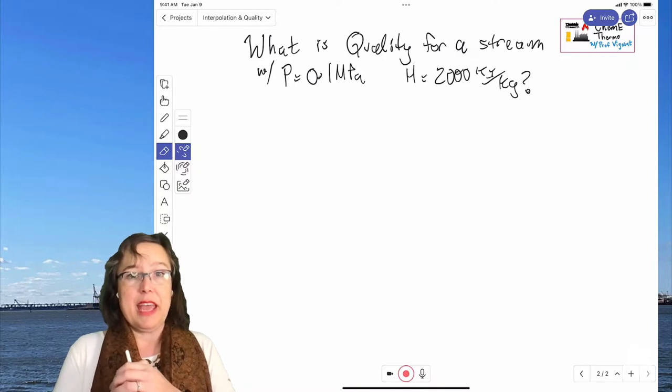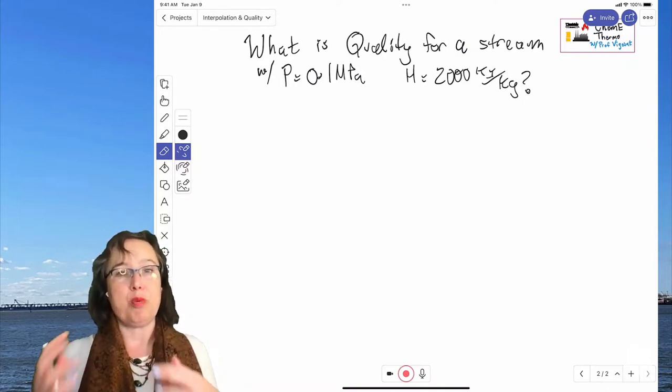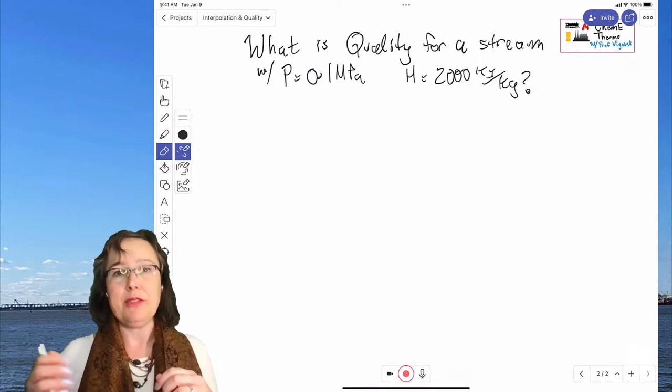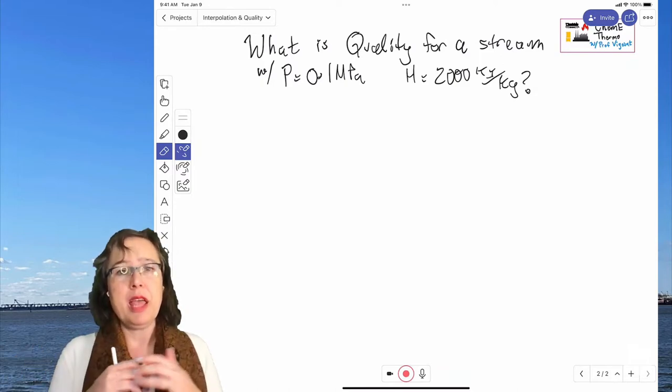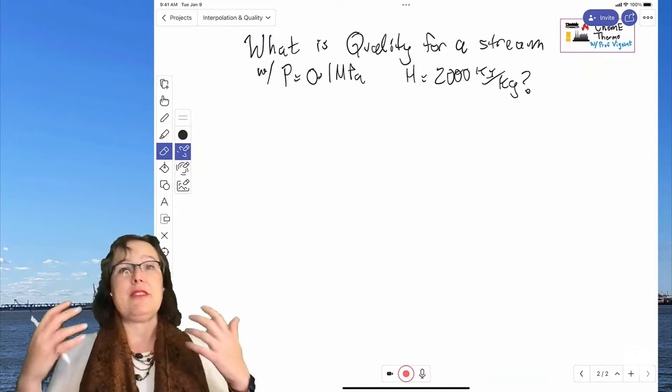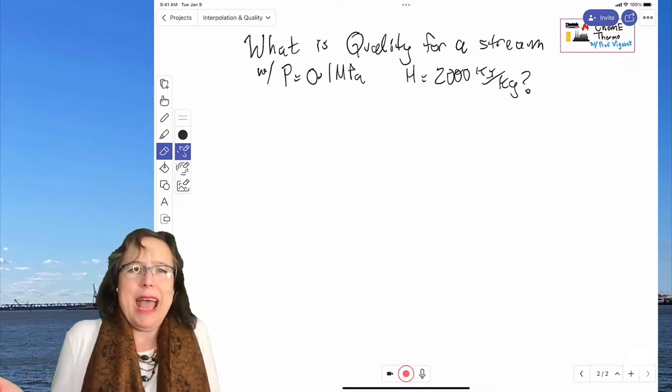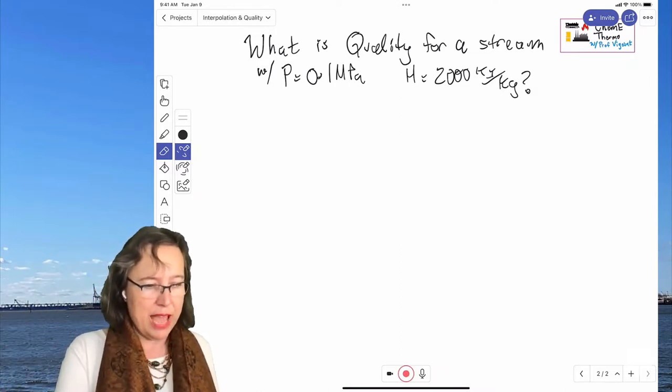So the question then is, if we have a stream and we know that its pressure is 0.1 megapascals, that's close to atmospheric pressure, and we know its enthalpy is 2000 kilojoules per kilogram, what's its quality? And you might be like, well, how do we even know it has a quality? And I'll show you that right now.